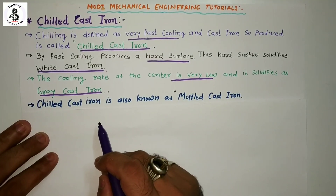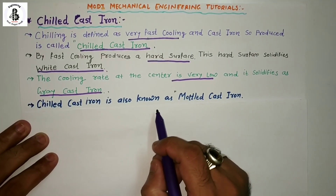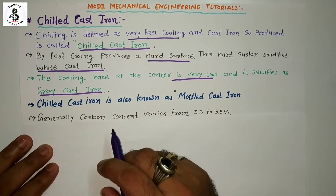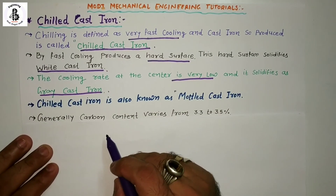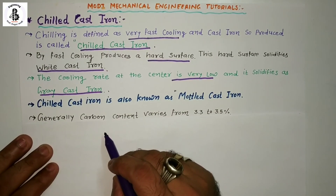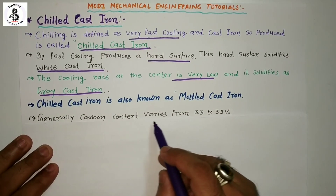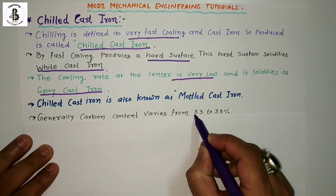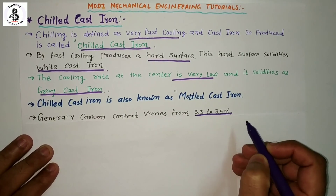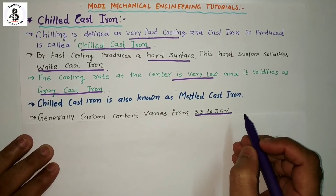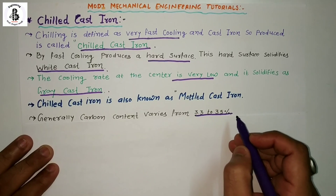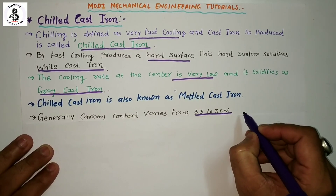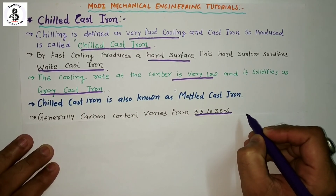Chilled cast iron is also known as mottled cast iron. Looking at the chemical composition, the carbon content varies from 3.3% to 3.5%, which falls in the category of hypo-eutectic cast iron.